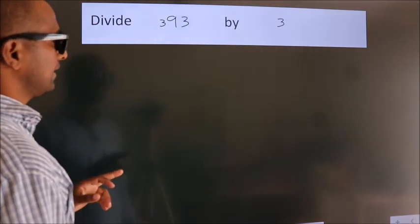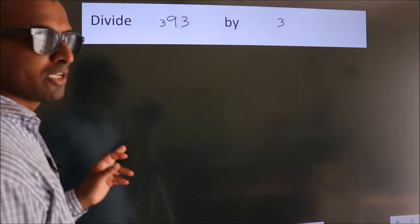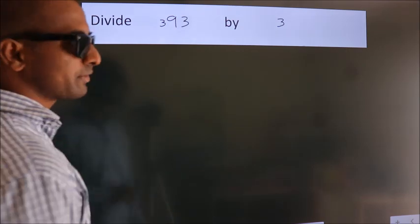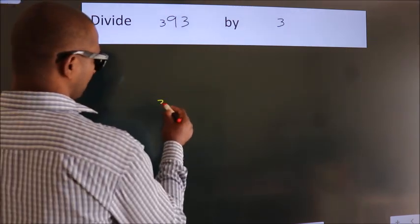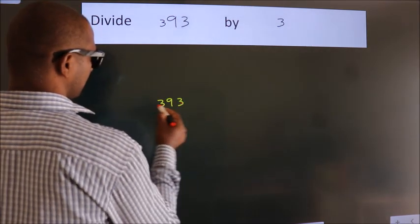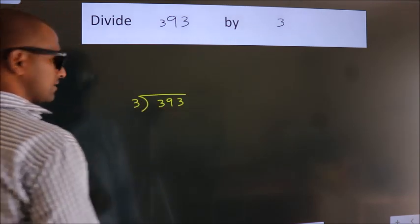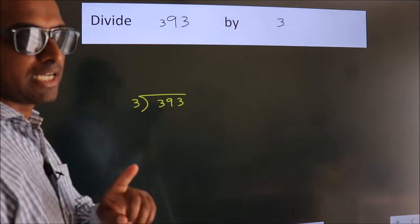Divide 393 by 3. To do this division, we should frame it in this way. 393 here, 3 here. This is your step 1.